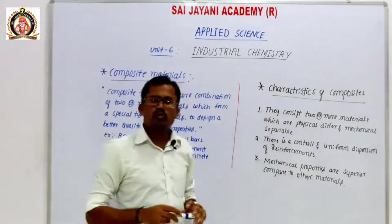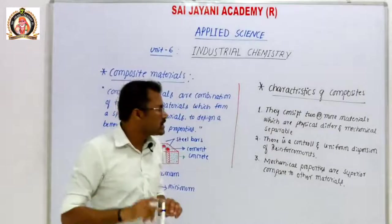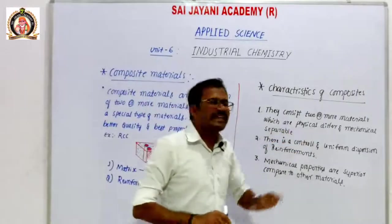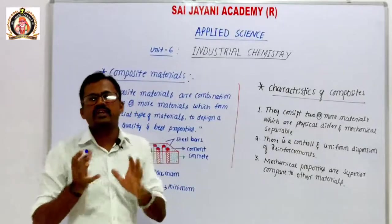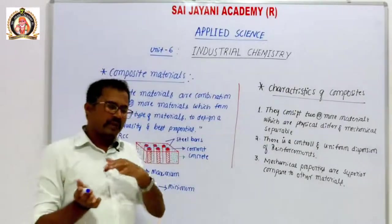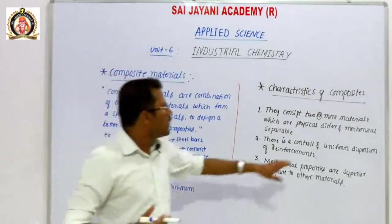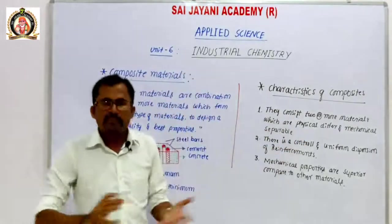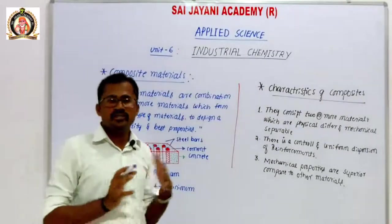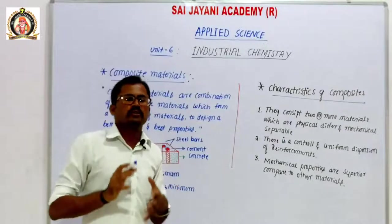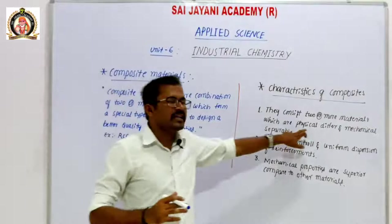The first characteristic of composite materials is that they consist of two or more materials which are physically different. The elements in composite materials are physically different and mechanically separable. One and one mixed together form a heterogeneous mixture, where both materials are mechanically separable and physically different.